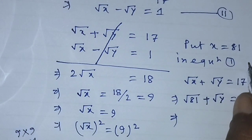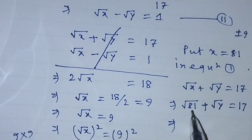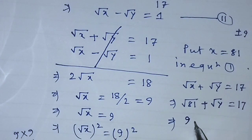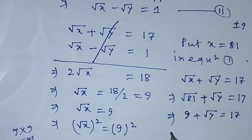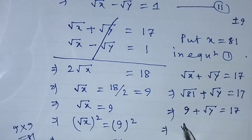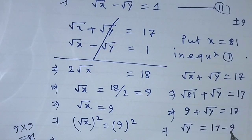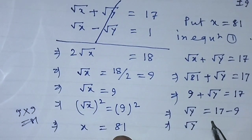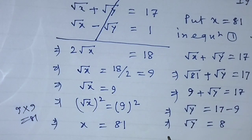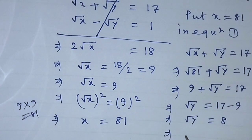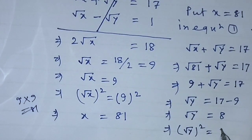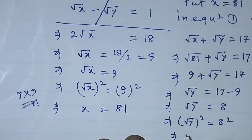To get the value of y, we put x equals 81 into equation number 1: root over of 81 plus root over of y equals 17. Root over of 81 is 9 (taking positive value), so 9 plus root over of y equals 17. Transposing 9, we get root over of y equals 17 minus 9, that is 8. Taking the square on both sides, root over of y whole square equals 8 square, giving us y equals 64.